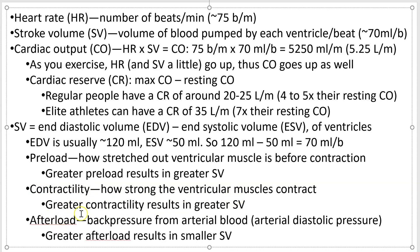Afterload is going to be a negative. Afterload is how much back pressure you get in the arterial blood — this is your diastolic pressure effectively. If you've got normal blood pressure of 120 over 80, there's only 80 millimeters of mercury resistance to you trying to pump blood out. If you have hypertension — say 150 over 100 — the 100 is the diastolic pressure, and that means you've got 20 millimeters more resistance, which is not good for your heart. So if you increase preload and contractility, you get greater stroke volume; if you have higher back pressure in the arteries, you get a smaller stroke volume.